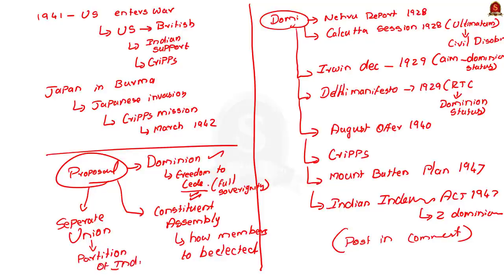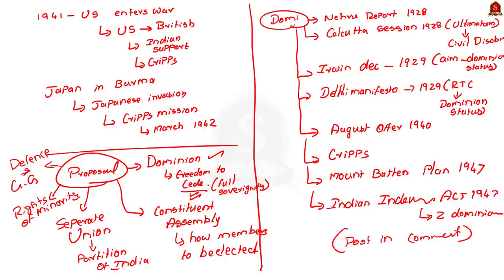The mission said that until the new constitution is formed, the defense of India would remain under British control and the power of the Governor General would remain the same. Finally, the Cripps Mission also ensured that the rights of the minorities would be protected. These are the important proposals of the Cripps Mission.